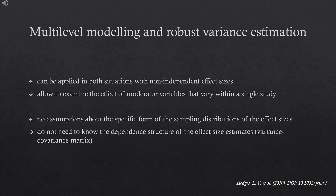Multilevel modeling and robust variance estimation are the most reliable approaches for dealing with this dependence. Importantly, they make no assumptions about the specific shape of the sampling distribution of effect sizes, and you do not need to know the dependence structure of the effect size estimates.